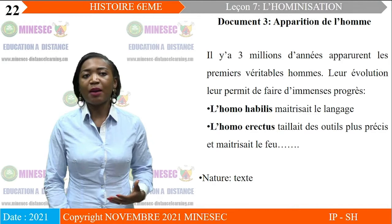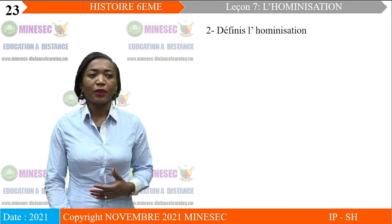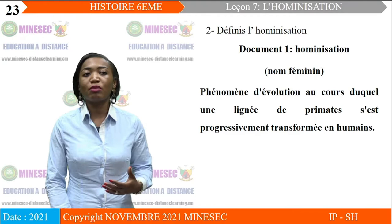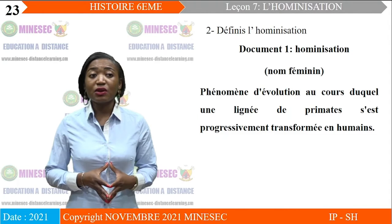Nous allons passer à la deuxième consigne : définissez l'hominisation. Pour ce faire, nous allons faire appel à notre document 1. D'après ce document, l'hominisation est un phénomène d'évolution au cours duquel une lignée de primates s'est progressivement transformée en humain.